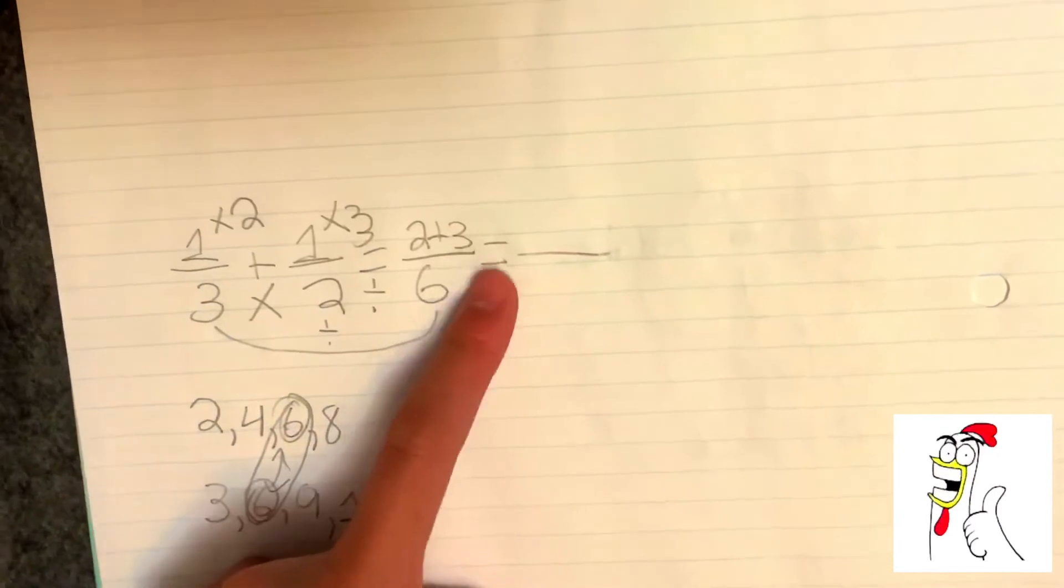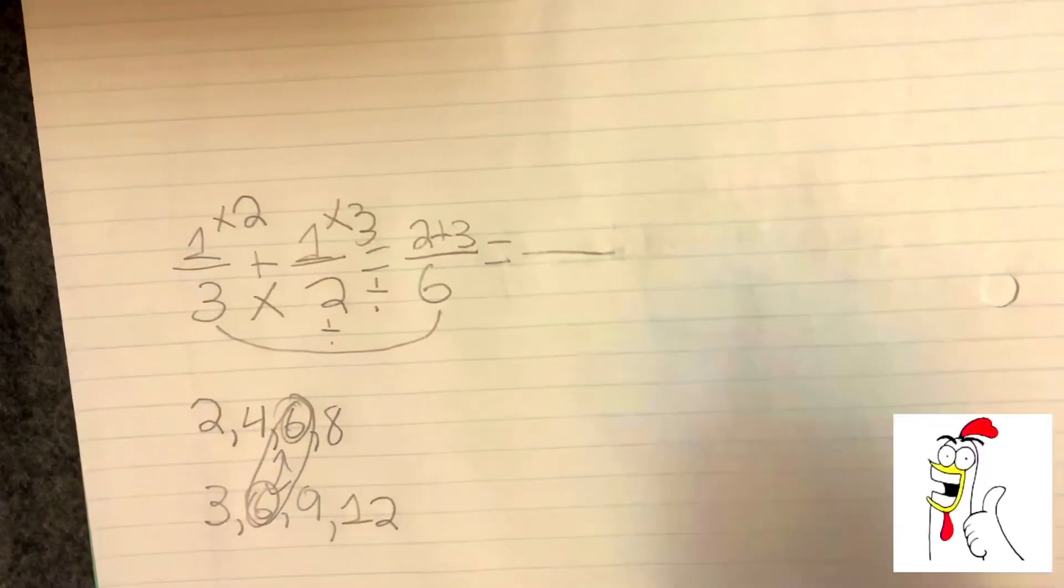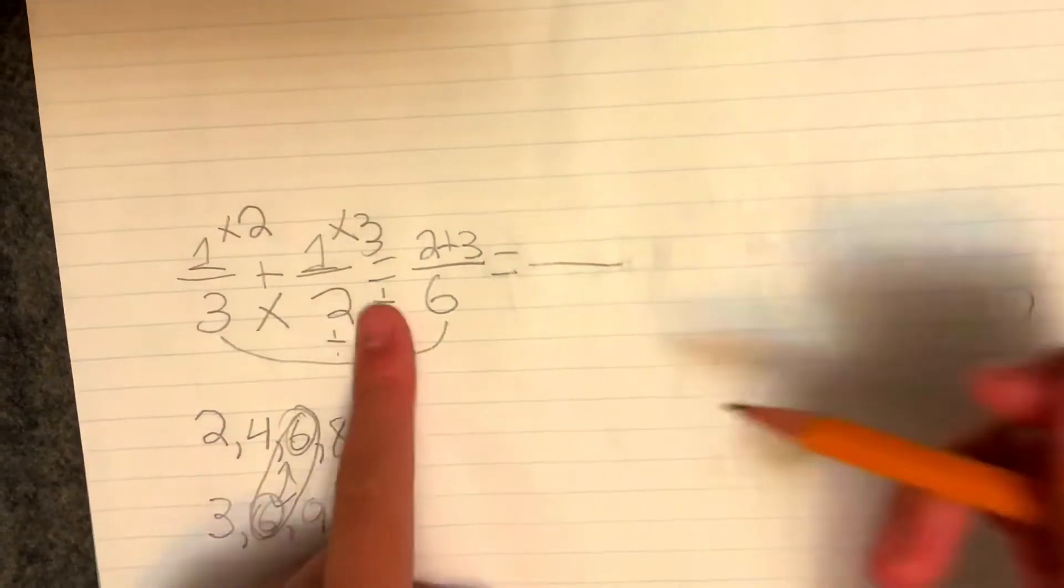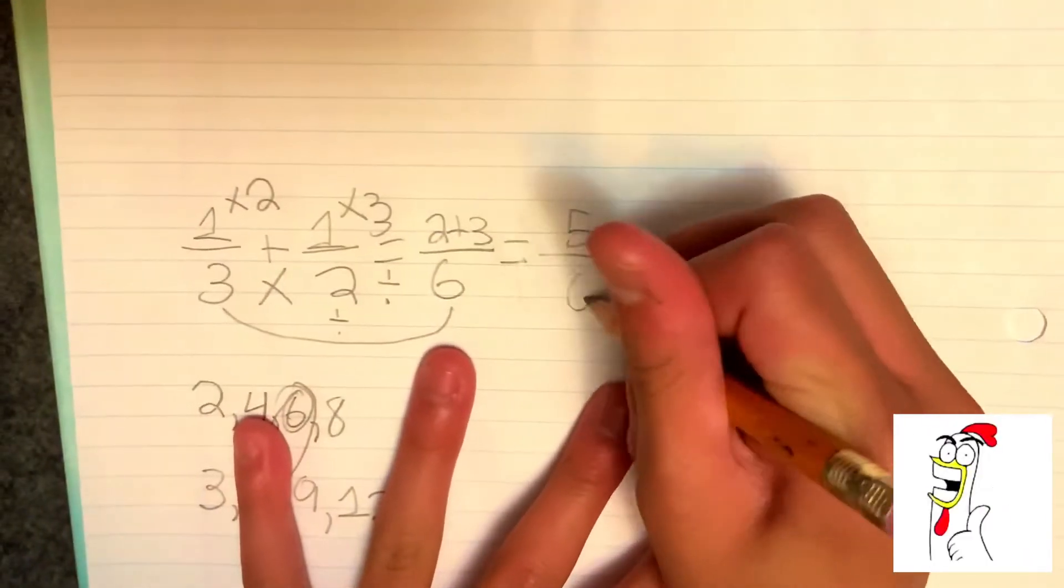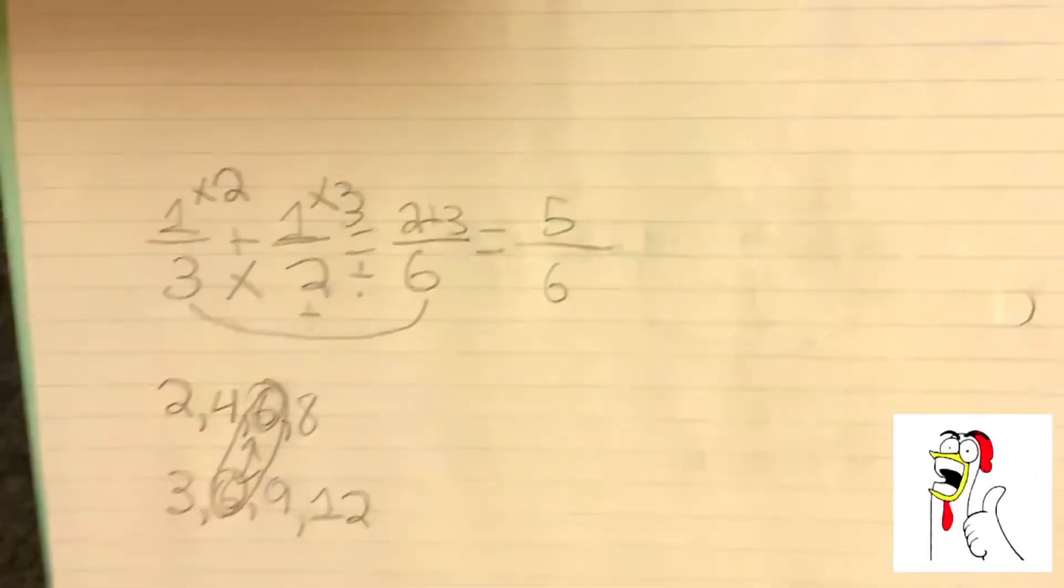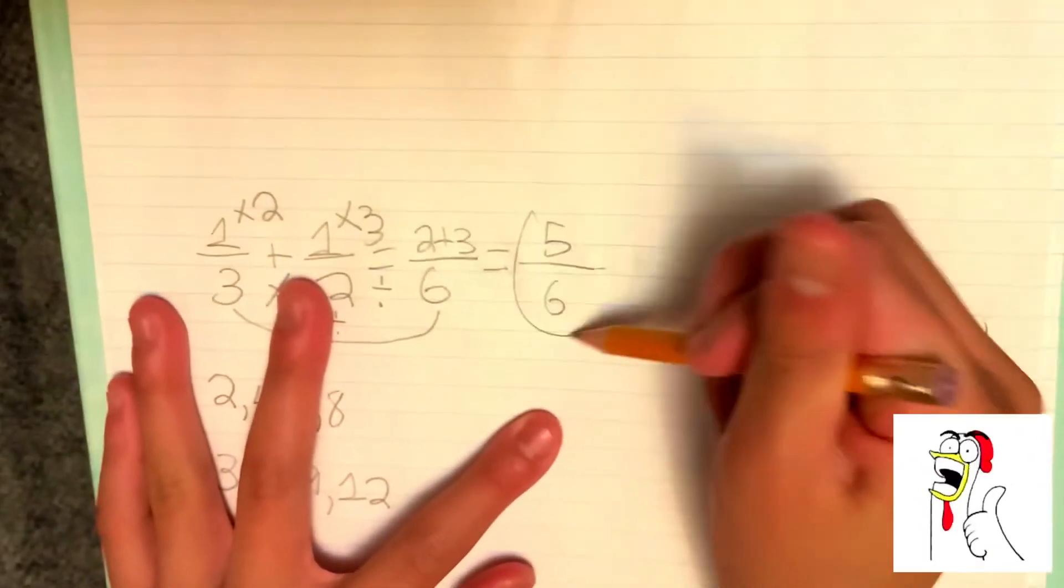Now we're going to add. Dua plus tatla equals five or two plus three in English. Now five, six. There we go. We have our answer completed. Woo!